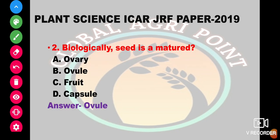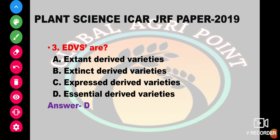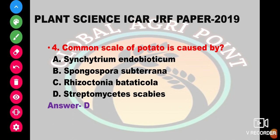Biologically, a seed is a matured ovule. A fruit is a matured ovary. A capsule is an ovule. The dried variety is essentially a dried variety. The common scab of potatoes is caused by which organism?